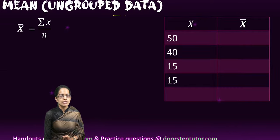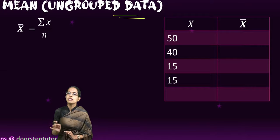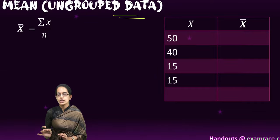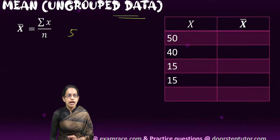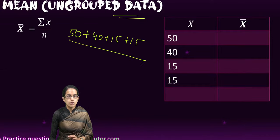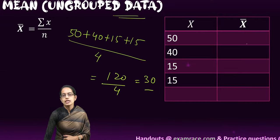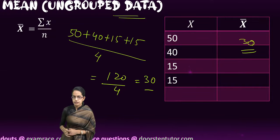The first thing we understand is the easiest one: finding arithmetic mean for ungrouped data. I have four values: 50, 40, 15, and 15. To find the mean, I add all four values: 50 + 40 + 15 + 15 = 120, divided by 4. So 120 divided by 4 gives me 30. My mean here is 30, and this is the very simple direct method of finding the arithmetic mean.